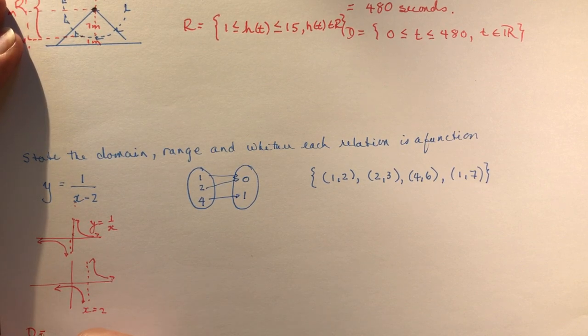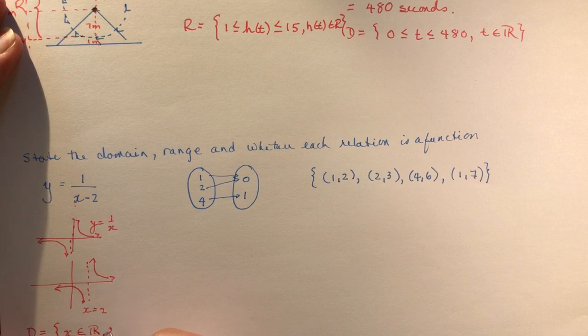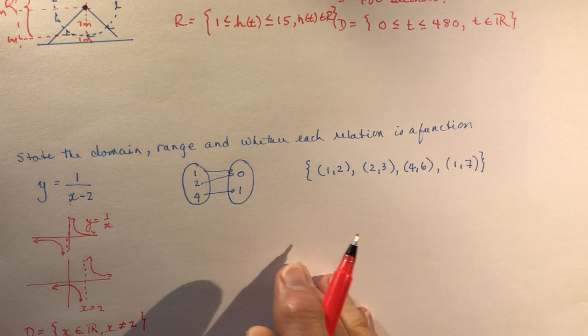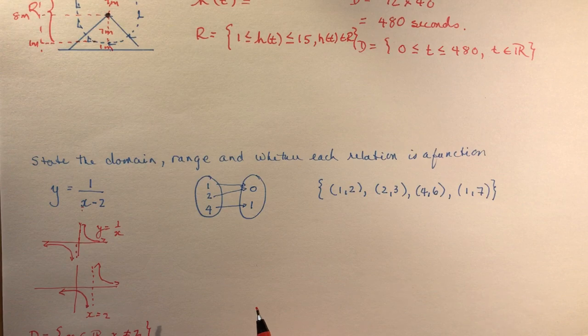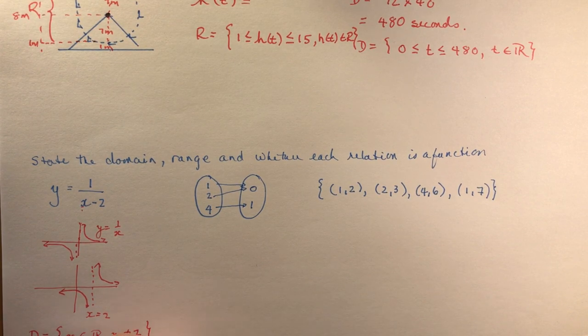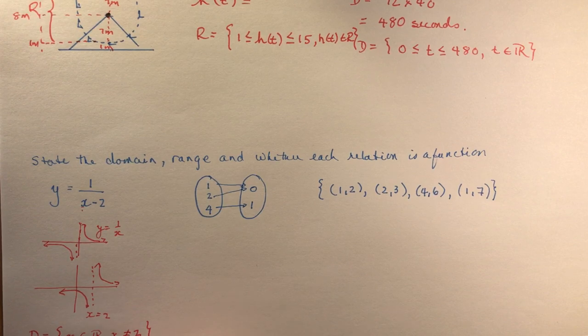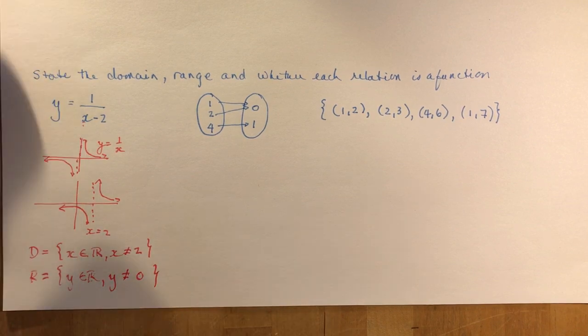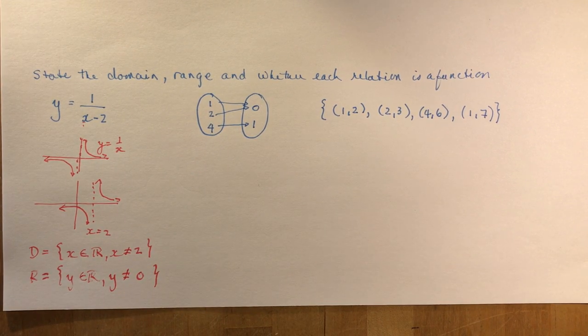What is the domain? X is an element of real numbers, x is not equal to two. That's this one here. And the range, well it goes everywhere, doesn't it? Except where? Doesn't go to zero. So y is an element of real numbers, y is not equal to zero.